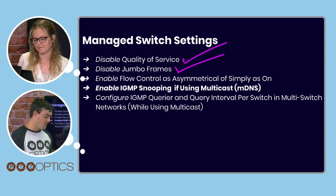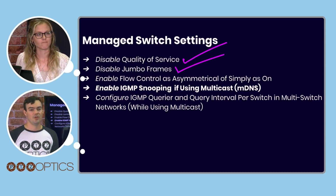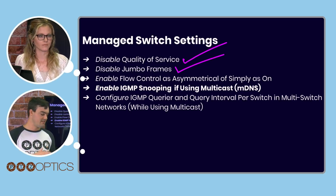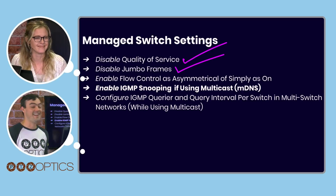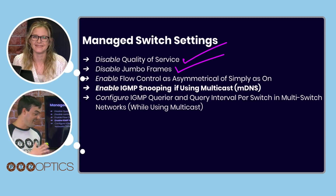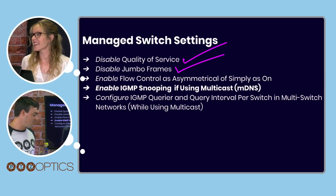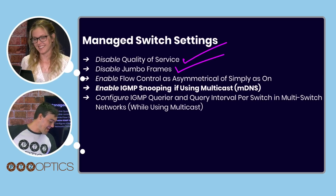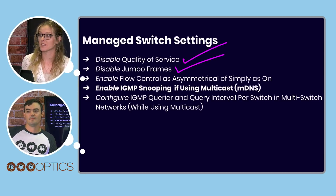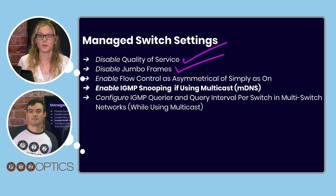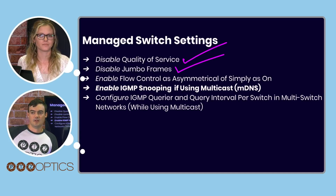Disable jumbo frames — that's another setting you want to turn off on a managed switch. Enable flow control, set it as asymmetrical or simply as on. Highlight enable — that's one of the key points our lead engineer Matt wanted us to bring up.